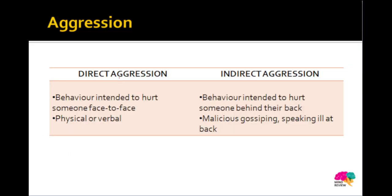Let us get started with understanding what aggression is, what types of aggression there are, and which theories explain aggression in psychology. Aggression is a very common term. Now, indirect aggression and direct aggression can both occur. Direct aggression is a behavior that you do to hurt another person face to face — either physically by pushing or kicking, or verbally by insulting or cursing somebody.